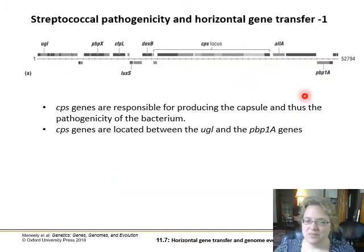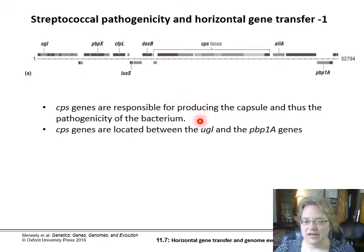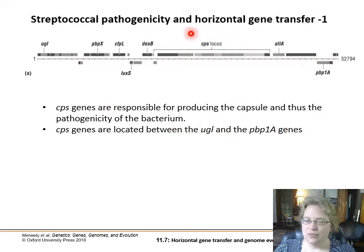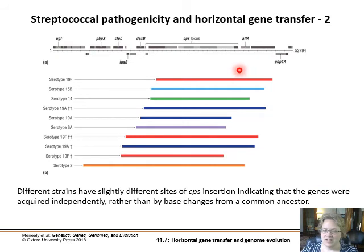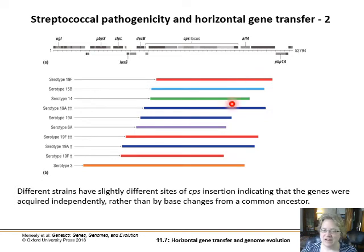Here is the Streptococcus genome and the CPS locus — the capsule locus — which produces the capsule and affects the pathogenicity of the bacterium and whether the host cell can recognize that it's an invader. We have two flanking markers: the ugl gene on one side and the pheP1a gene on the other. Looking at different serotypes — different strains of the virus — they have very different sites of CPS insertion. These different capsule proteins haven't just been acquired through base changes from a common ancestor; they've been actively swapped and horizontally transferred between different strains.